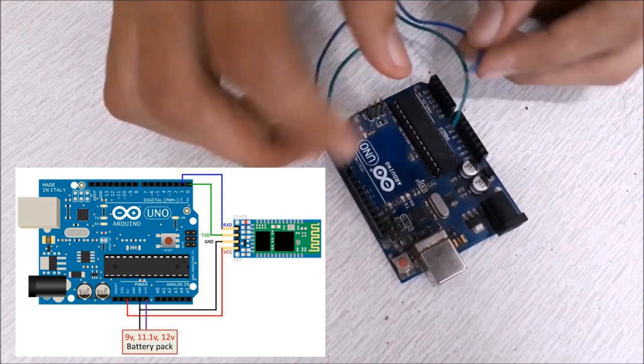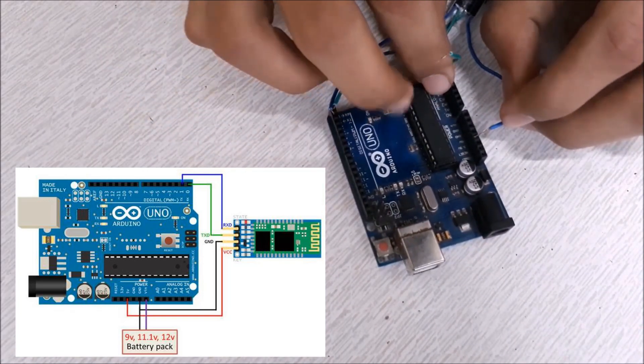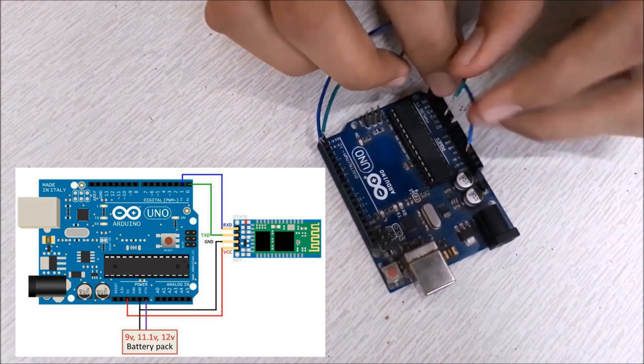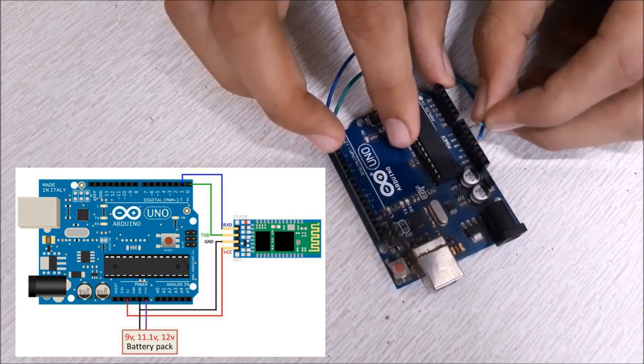You can connect the VCC pin to 3.3 or 5V on Arduino. And connect the GND of HC05 to GND of Arduino.